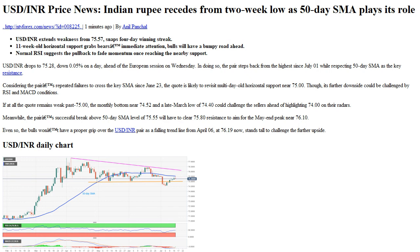By Anil Panchal: USDINR extends weakness from 75.57, snapping a 4-day winning streak. An 11-week-old horizontal support grabs bears' immediate attention, while bulls will have a bumpy road ahead. Normal RSI suggests the pullback will fade momentum once reaching the nearby support.